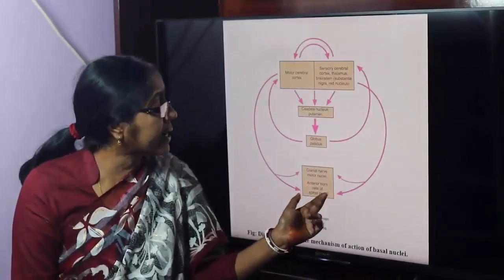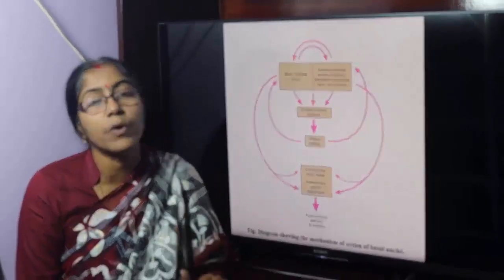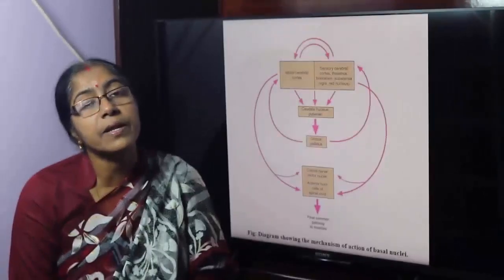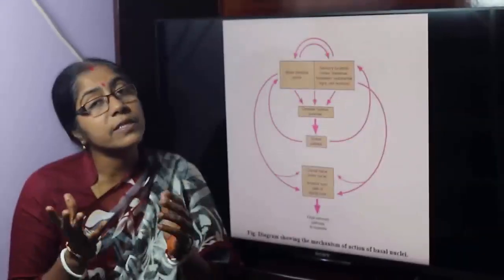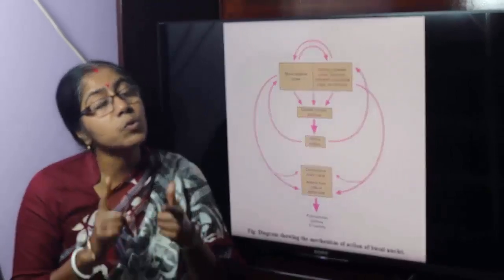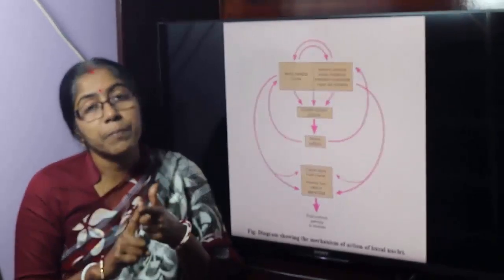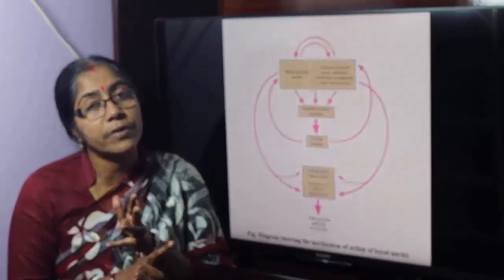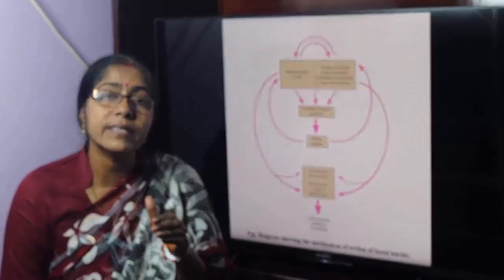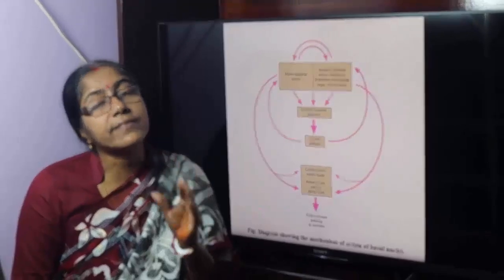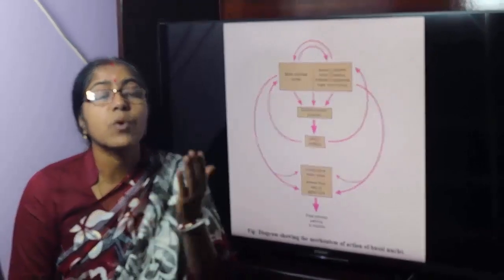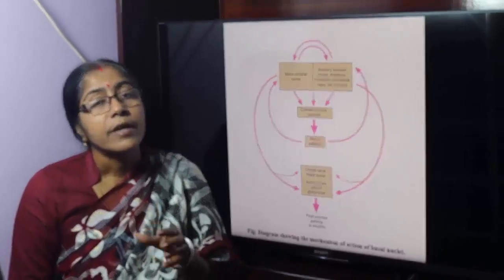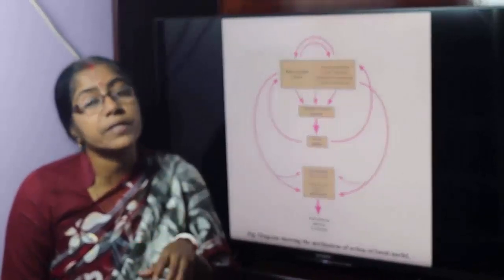What are the disorders of the basal nuclei? There are two types of problems: hyperkinetic disorders and hypokinetic disorders. The hyperkinetic disorder involves excessive abnormal movement — that is, choreoathetosis. The hypokinetic disorder involves a lack of movement.